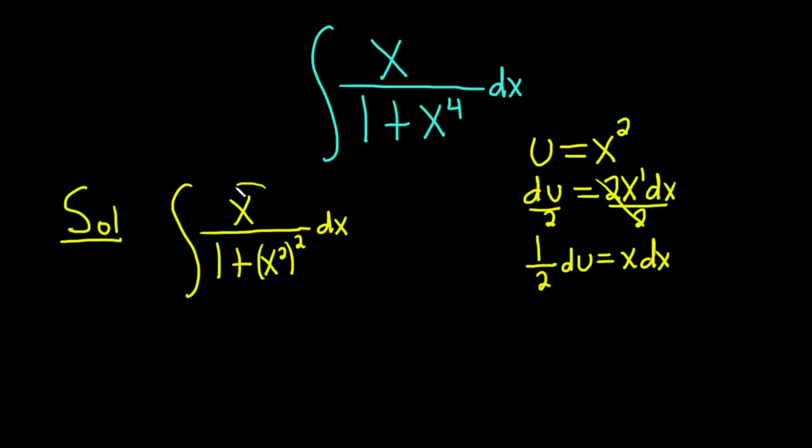And now we can make a substitution. You see x dx is 1 half du. So you can pull out the 1 half. We have the integral sign, and then we have the du. So far the only thing that's been replaced is what's circled here. x dx is 1 half du. Then we have the line, which is the division sign, and 1 plus. And then x squared is u, so this is u squared.